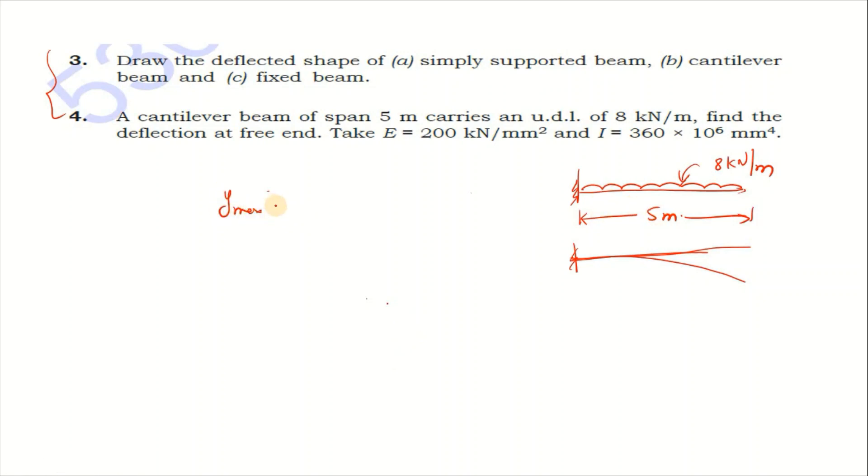W is 8 kilonewton per meter, L is 5 power 4 meter power 4 by 8 into EI. E is 200 kilonewton per mm square times I is 360 × 10⁶ mm⁴.